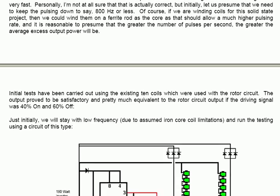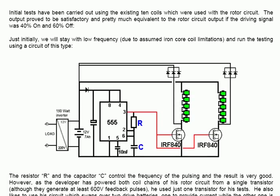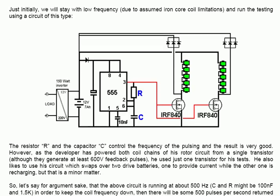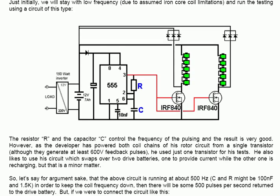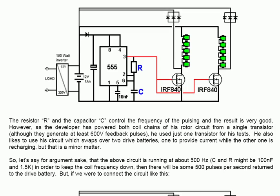Initial tests have been carried out using the existing 10 coils which were used with the rotor circuit. The output proved to be satisfactory and pretty much equivalent to the rotor circuit output if the driving signal in the pulsing was 40% on and 60% off. That is a 40% duty cycle. Just initially we will stay with low frequency due to assumed iron core coil limitations and run the test using a circuit of this type.